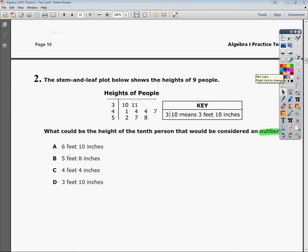So the reality is, I need to figure out what each one of these terms means. It gives me a nice little key, it says that the 3 slash 10 means 3 feet 10 inches. So I've got 3 feet 10 inches, 3 feet 11 inches,